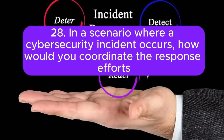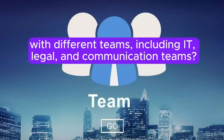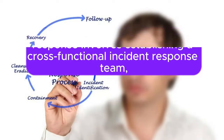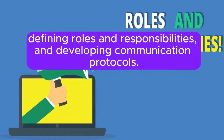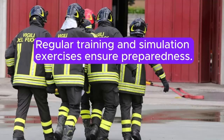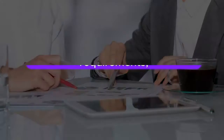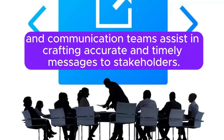Question 28: In a scenario where a cybersecurity incident occurs, how would you coordinate the response efforts with different teams, including IT, legal, and communication teams? Answer: Coordinating incident response involves establishing a cross-functional incident response team, defining roles and responsibilities, and developing communication protocols. Regular training and simulation exercises ensure preparedness. Collaboration with legal teams ensures compliance with reporting requirements, and communication teams assist in crafting accurate and timely messages to stakeholders.